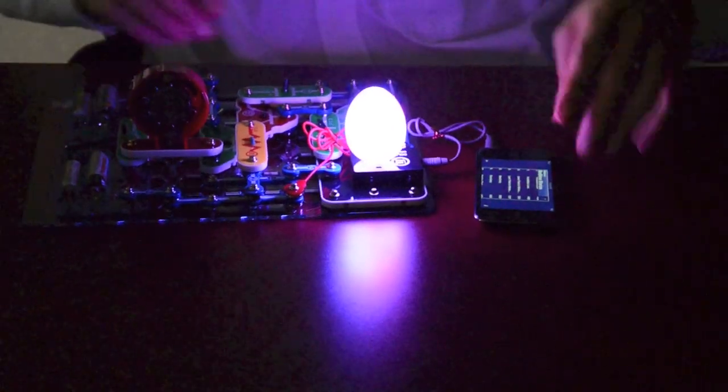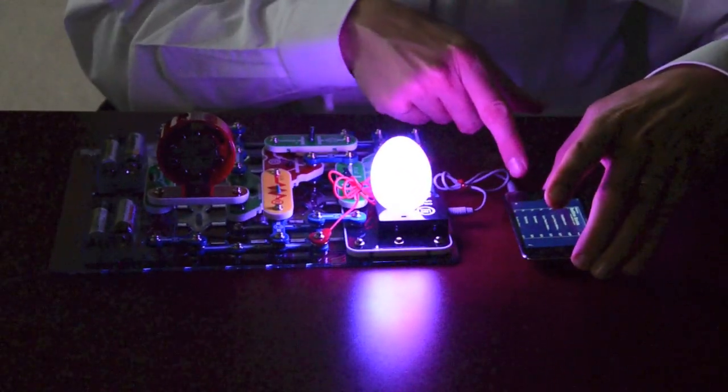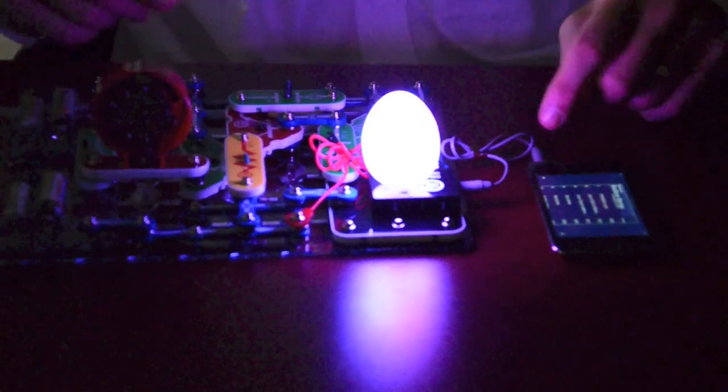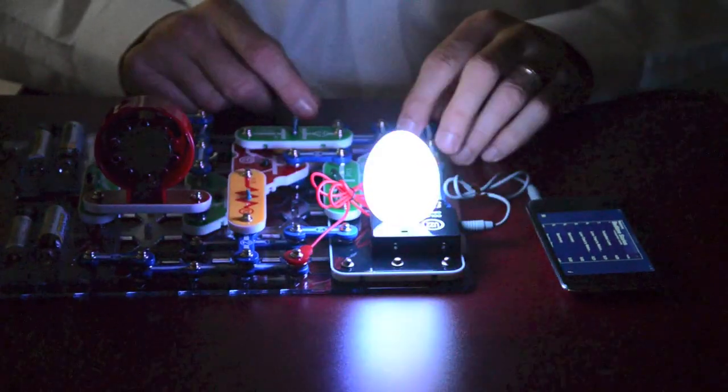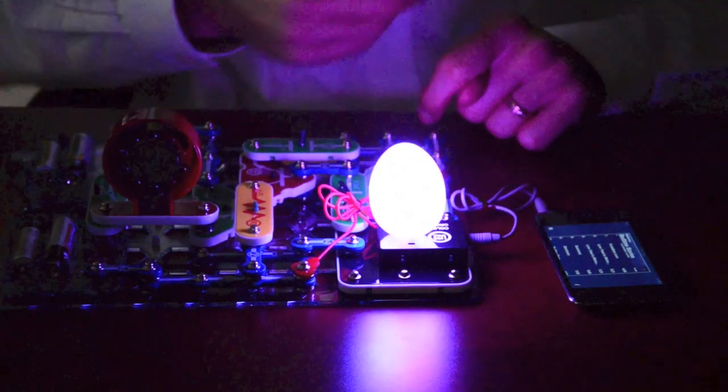Here's another circuit. You can connect the color organ to your music device and start some music on it. Then the color organ light follows your music.